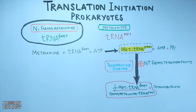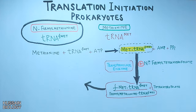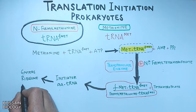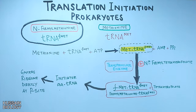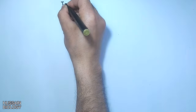In this reaction, transformylase transfers a formyl group from formyl-tetrahydrofolate to the amino group of the methionine residue, giving the above products. This is the initiator aminoacyl-tRNA. It enters the ribosome directly at the P site, whereas the rest of the aminoacyl-tRNAs enter at the A site of the ribosome.